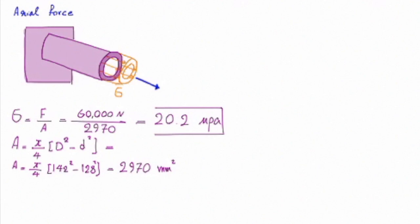I simply divide force by area, and that gives me 20.2 megapascals. This stress is uniform across the section, so everywhere in that tube the stress would be 20.2, and that would be tension stress because of the direction of force.